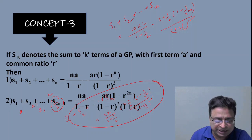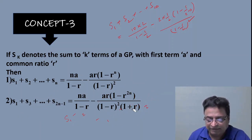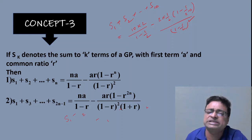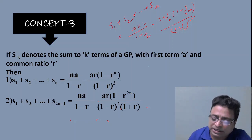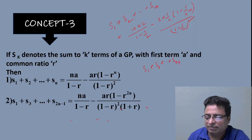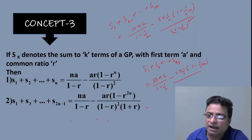Concept three, second part: the sum of odd-indexed partial sums, meaning S₁ + S₃ + ... + S(2n−1). If asked this, immediately write: n·a/(1−r) − ar·(1−r²ⁿ)/[(1−r)²·(1+r)]. For example, if asked S₁ + S₃ + ... + S₉₉ with a = 2 and r = 1/2, here n = 50, so: 50·[2/(1−1/2)] − 2·(1/2)·[1−(1/2)¹⁰⁰]/[(1−1/2)²·(1+1/2)]. Simplify to get the answer directly.